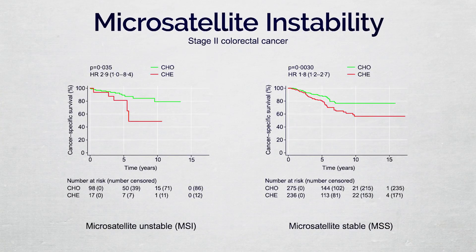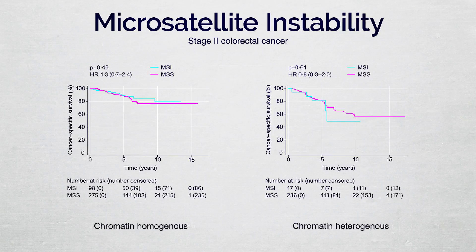Chromatin heterogeneity was a significant predictor of cancer specific survival in microsatellite unstable and microsatellite stable stage 2 tumors. However, microsatellite instability did not supplement chromatin heterogeneity.